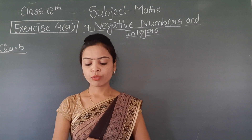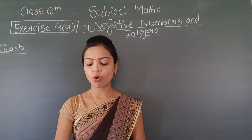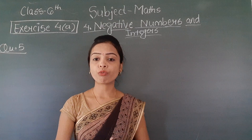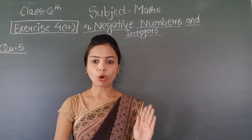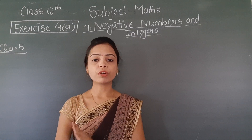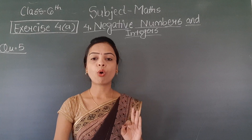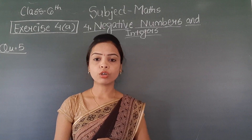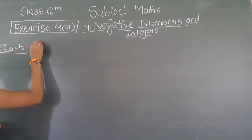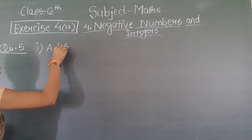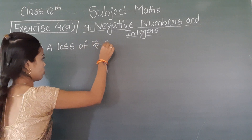The first question is: profit of rupees 35. What is the opposite of profit? The opposite of profit is loss. So the answer for this question is: a loss of rupees 35.